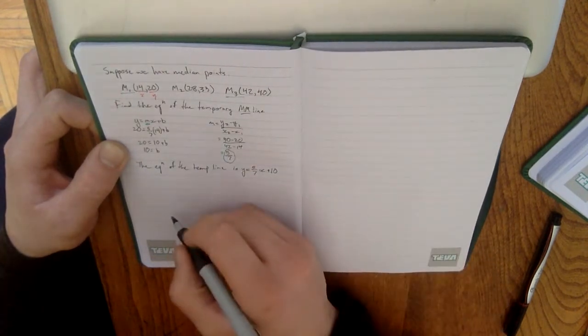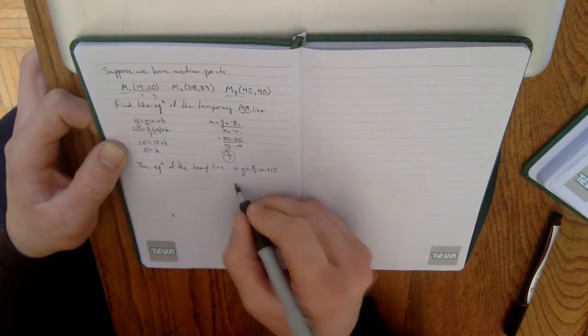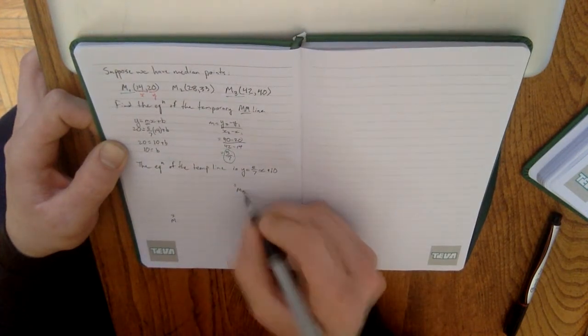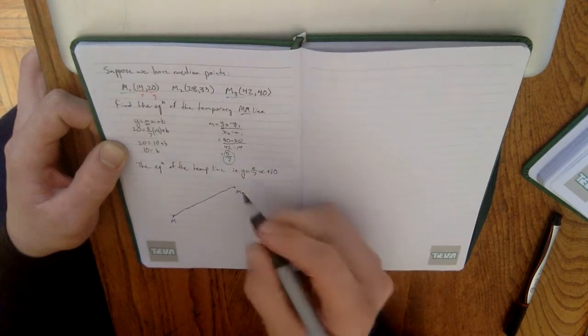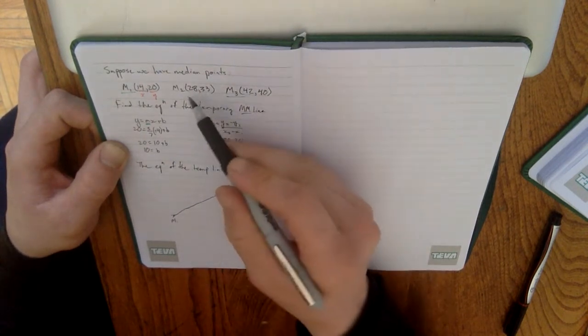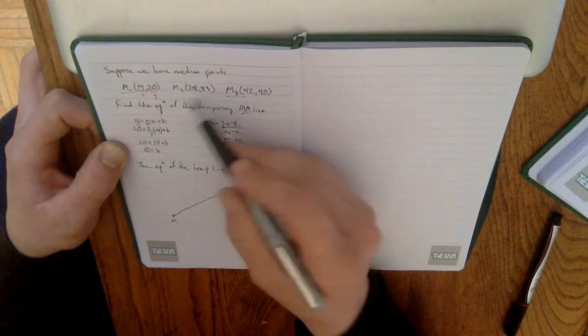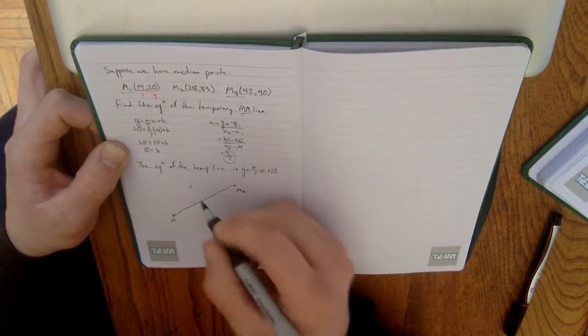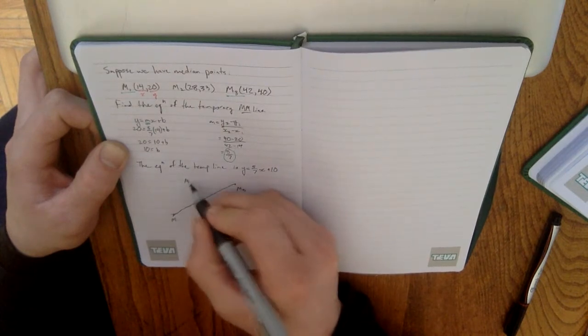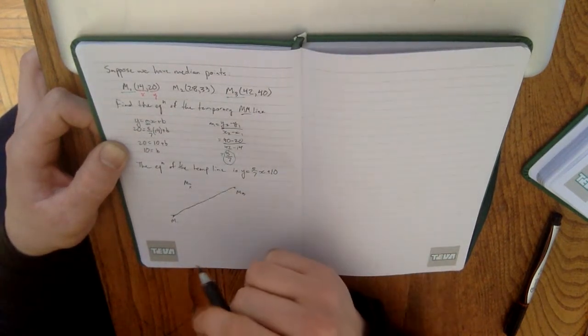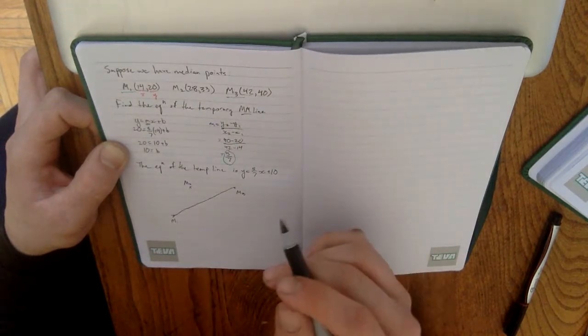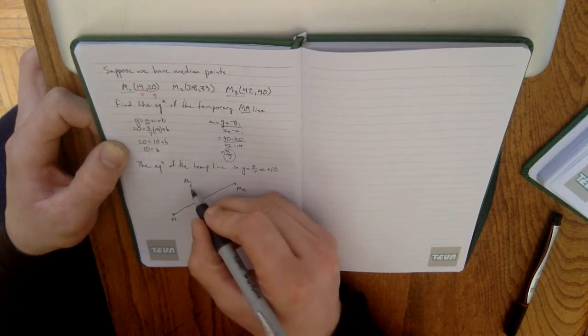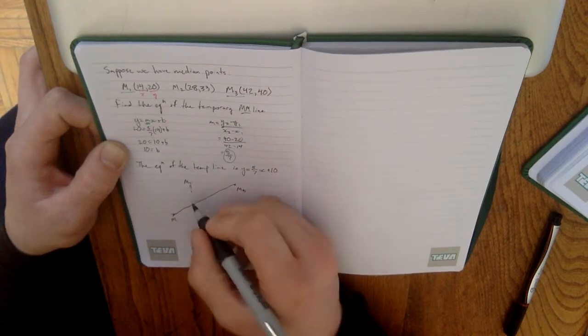Now, remember the temporary line is the thing that connects M1 and M3. So, it's that straight line that connects those two things there. Now, our other value of M2 does not necessarily lie on this line. So, it could be above the line or it could be below the line. We'll just assume for now that it's above the line.